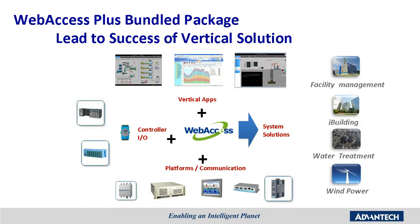Initially, we are offering five vertical bundles: Intelligent Building, Oil and Gas, Facility Management, Renewable Energy, and Water Treatment Solution Systems. Taking the BEMS solution as an example, different hardware and software products are listed. Users can take a big advantage of the bundled package cost, which shall be 50% less than purchasing separately. A more detailed explanation can be seen in the full Web Access Plus session.